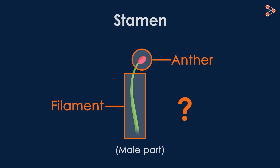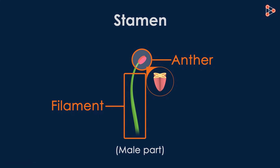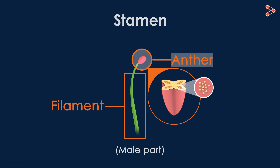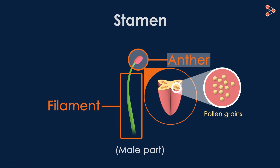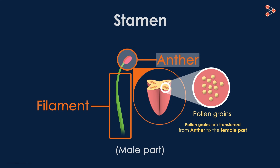Do you think that these structures have specific functions to perform? Yes, as a matter of fact, they do. The part called the anther bears minute round bodies called pollen grains, which play an active role in reproduction. There is a specific process by which pollen grains are transferred from the anther to the female part of the same or different flower.